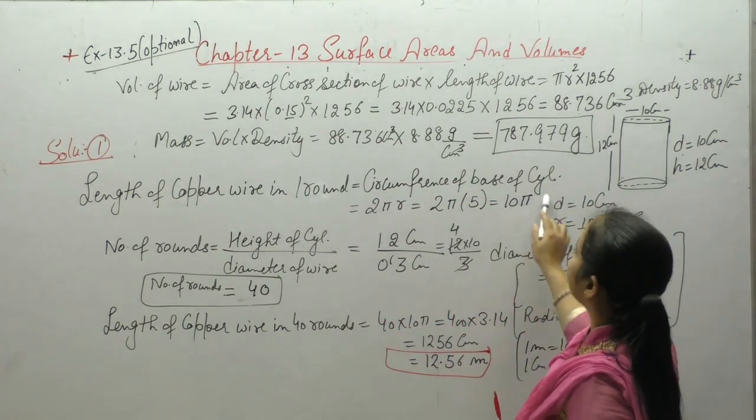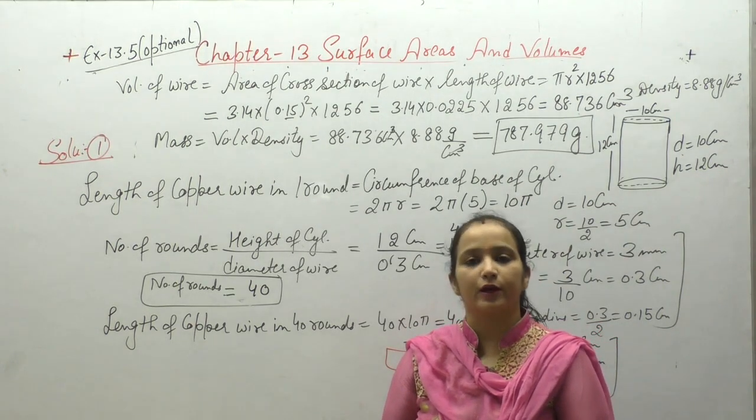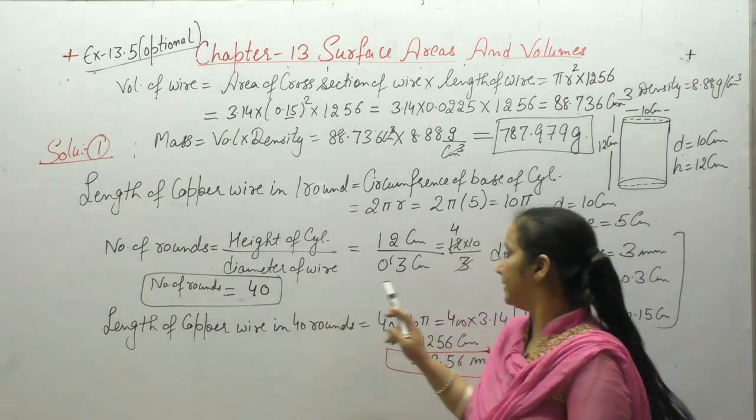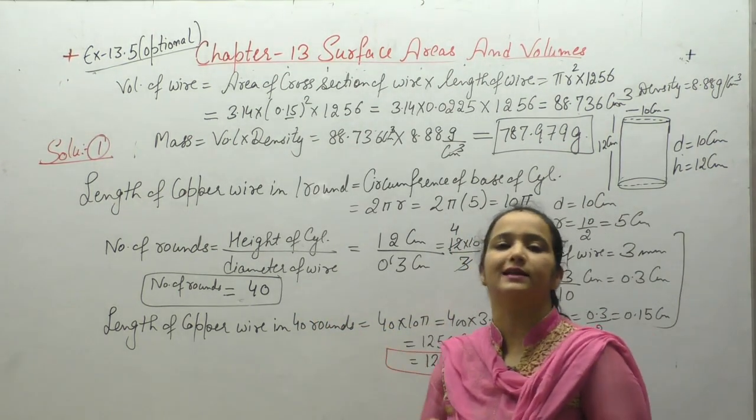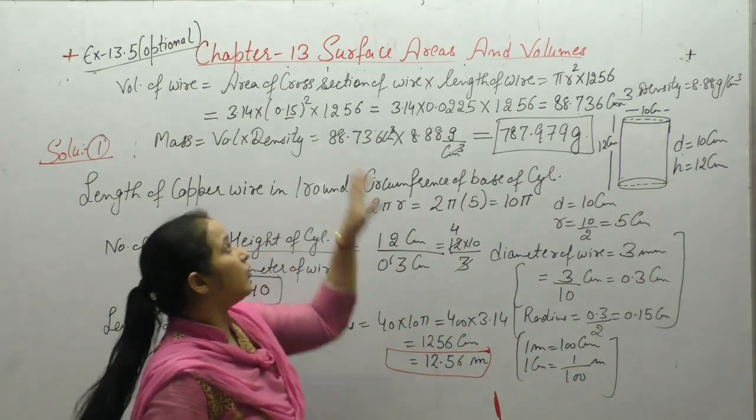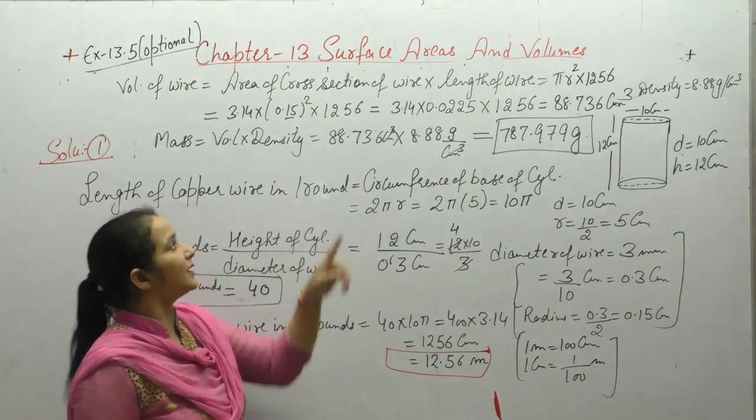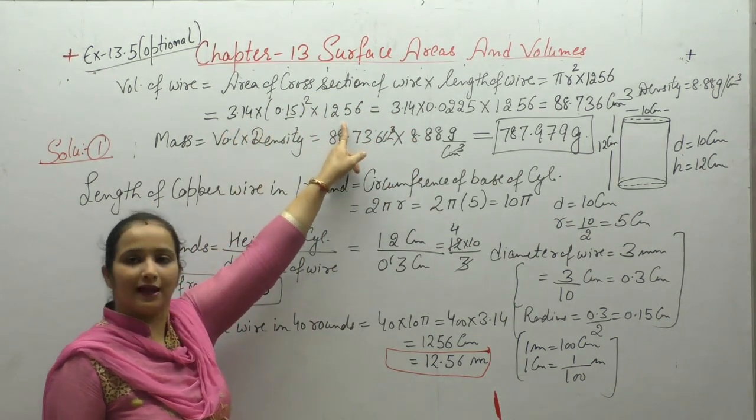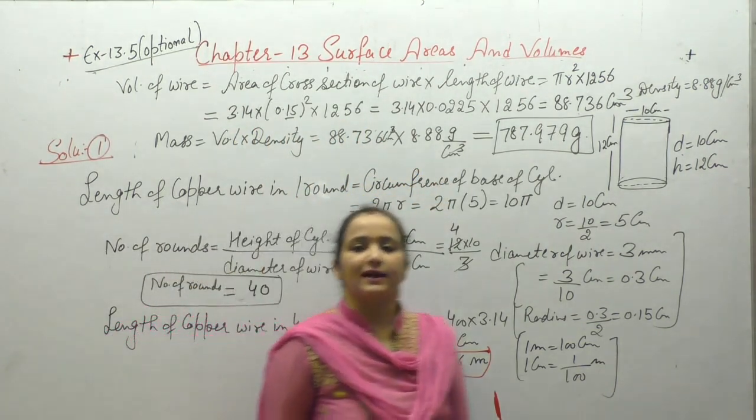Now length of copper wire in one round - what will it be? As much as its circumference of base of cylinder, that is 2πr. So we got 10π. Now this we got - in one round this much length of copper wire will be used. Now we need to find how many number of rounds are needed to cover the whole thing. That is height of cylinder upon diameter of wire. So we got 40 rounds. Now length of copper wire in 40 rounds - how much wire was used in 40 rounds? That is 1256cm. Now volume of wire: area of cross section of wire into length. In a cylinder, what is length? That is the height. So length πr² - area of circular base is πr² - into length of the wire. We solved and got 88.736 cm³.